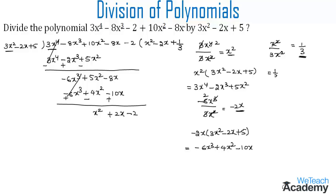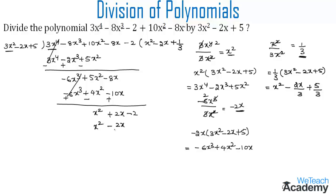Now let us multiply 1/3 with the divisor 3x² minus 2x plus 5. Multiplying 1/3 by 3x²: the 3s cancel giving x². Multiplying 1/3 by minus 2x gives minus 2x/3. And 1/3 times 5 gives plus 5/3. We write x² minus 2x/3 plus 5/3 below the new dividend.